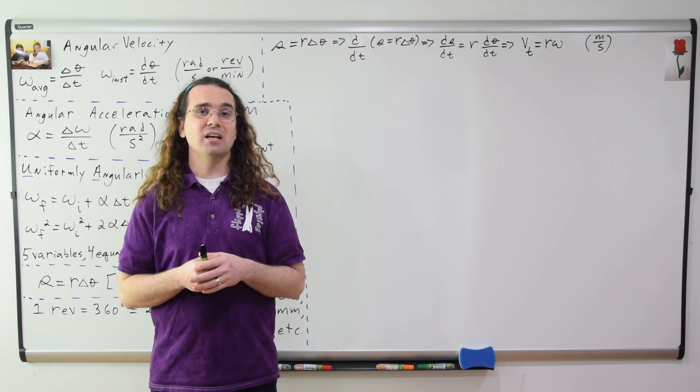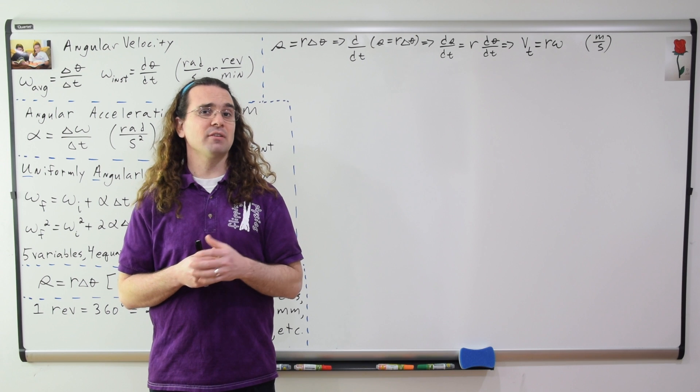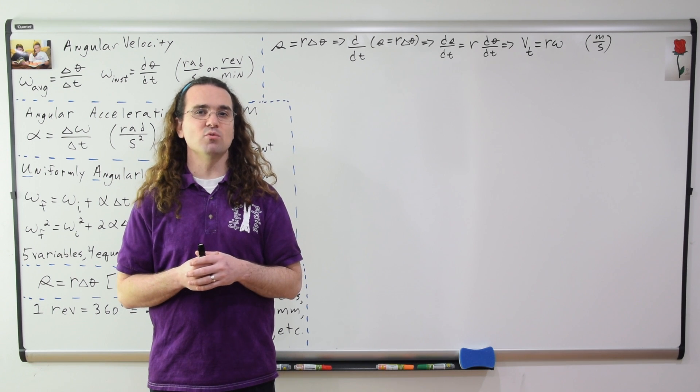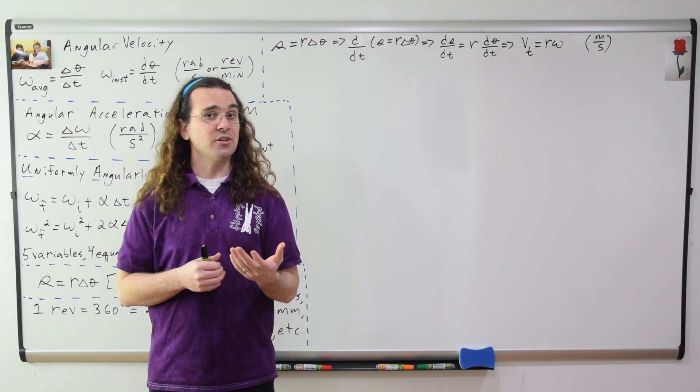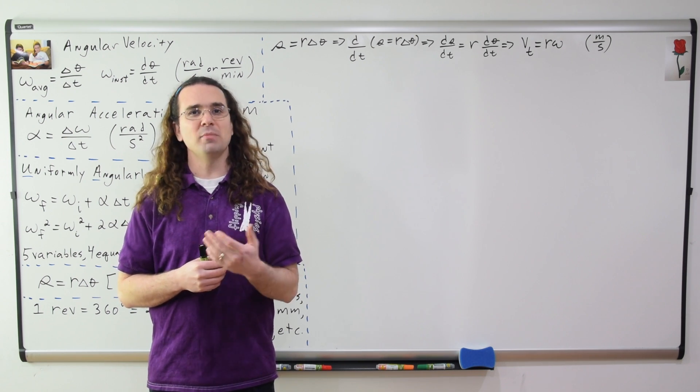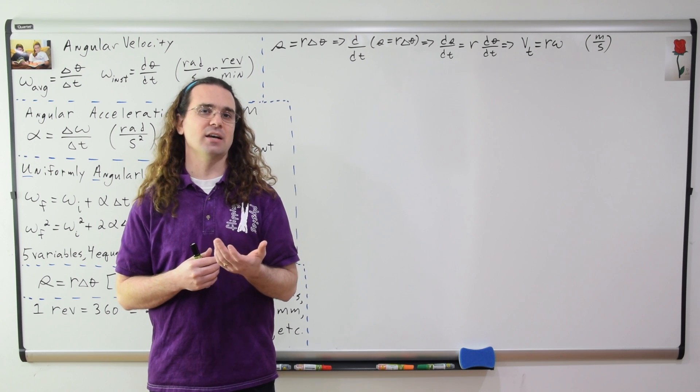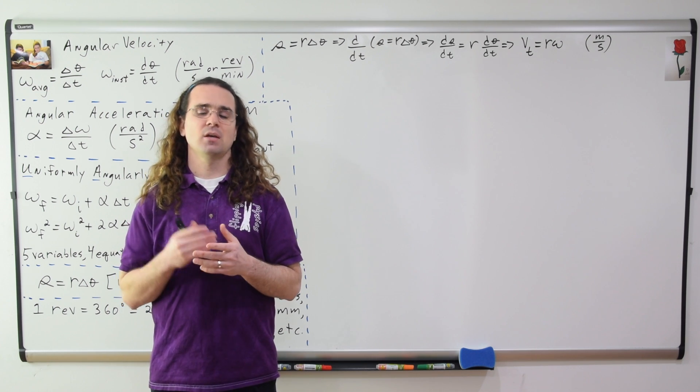Tangential velocity is the linear velocity of an object moving in a circle, and it has linear units — meters per second in base SI units.